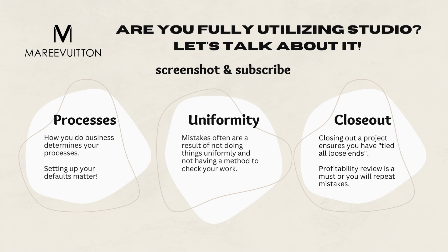Uniformity is the next thing because consistency is how I find mistakes. It's how I teach it and how I set it up for most businesses. You need uniformity because that is how I find mistakes — I always get asked that, and it's because I have processes and uniformity. And lastly, closing out is where you tidy up, review, and implement change so that you won't repeat anything that could have been improved in the last project.